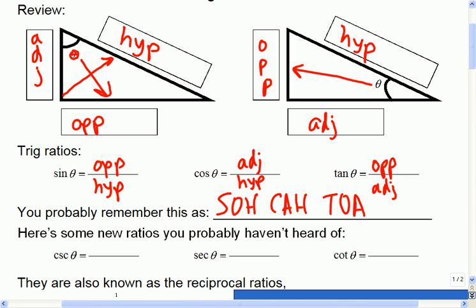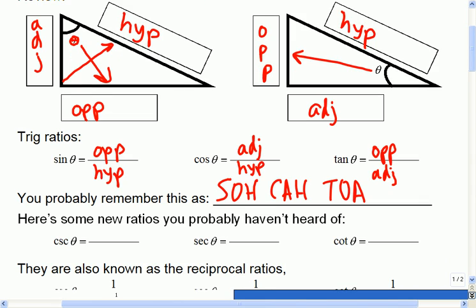First of all, the CSC, this is the cosecant, so this is how you would say it in English, cosecant, and the cosecant is the hypotenuse over the opposite.